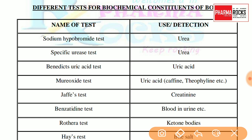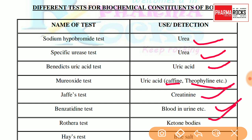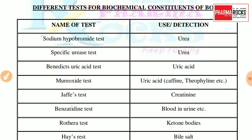Our body has different elements and constituents: urea, uric acid, caffeine, theophylline, creatinine, blood in urine, ketone bodies, bile salts — whatever you can identify for, these are covered in this table.